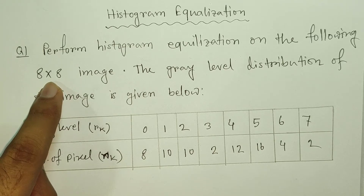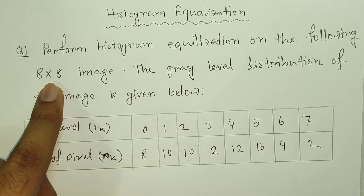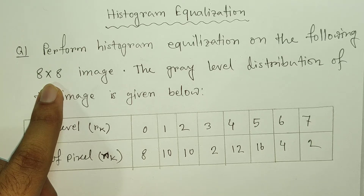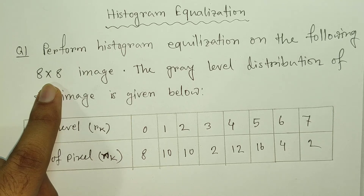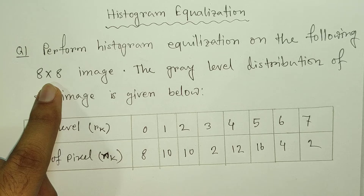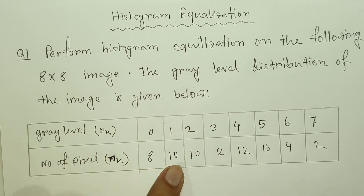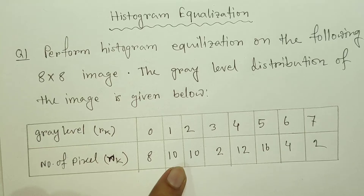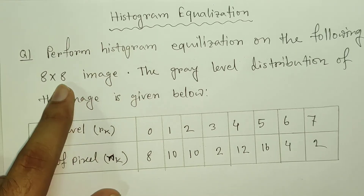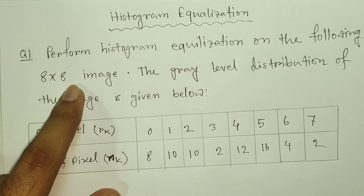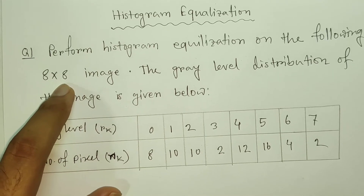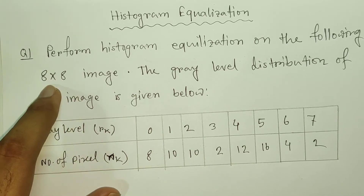Now the given image — we account for how it says 8 to 8-bit. This is a question about an 8-to-8-bit image. The image size is 64 into 64. So total number of pixels is 64 × 64. For any 64×64 image, the total number of pixels gives us the basis for the gray level distribution.